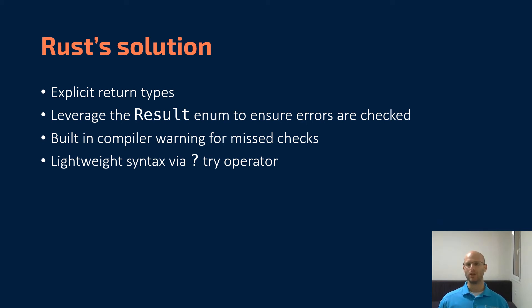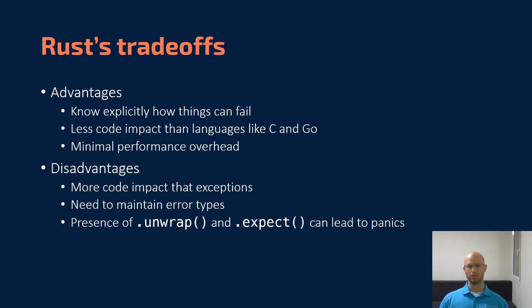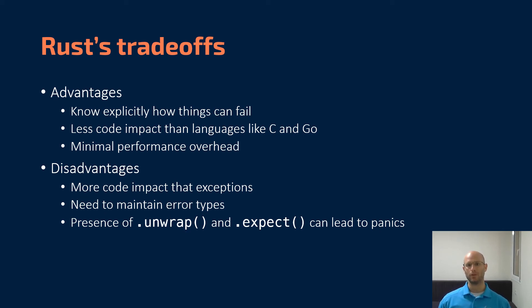To bypass a lot of the overhead and verbosity in your code, Rust has introduced an operator known as the try operator, which is just the question mark, and this really brings down the amount of code you need to write to do proper error handling. Some of the advantages with this approach: you always know in Rust explicitly how things can fail at the type level. You see something return a result and you can see which kinds of errors it may have. There's less impact on your code than in languages like C and Go, and it has minimal performance overhead.